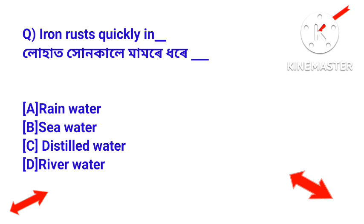Question: Iron rusts quickly in which medium? Answer: Sea water — iron rusts quickly in sea water (salt water).